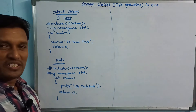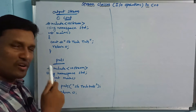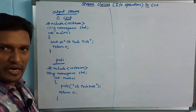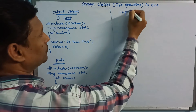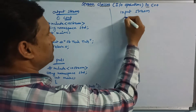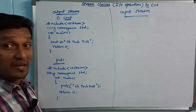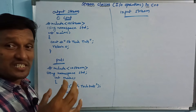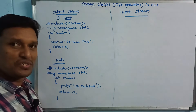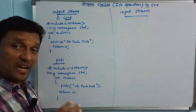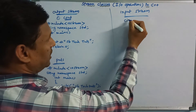This is the cout output operations. Here, this is the object; this is the function. The function handles formatted and unformatted operations. For input stream, we need the cin object — the scene object.